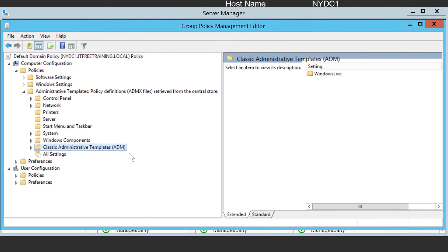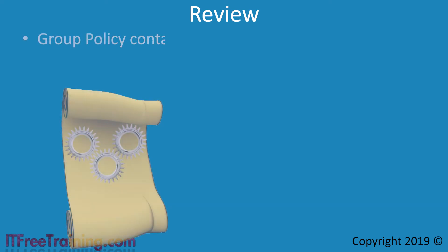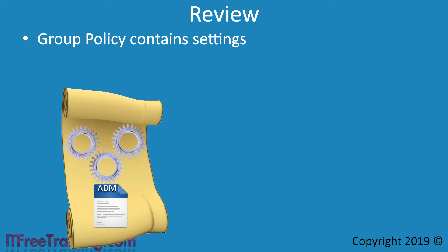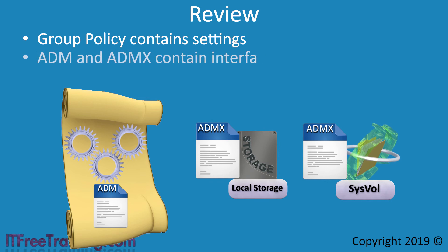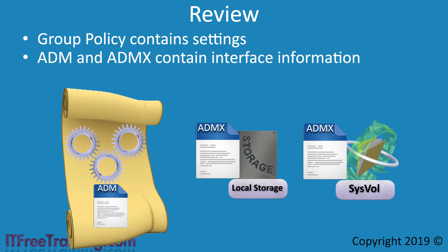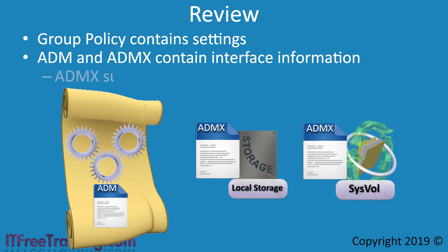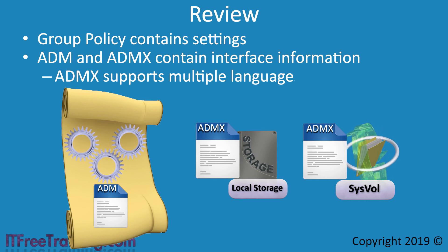This covers how to centralize ADMx files — the process is quite a simple one. To review: a single Group Policy contains settings stored in the Machine and User folders in the sysvol folder. ADM files are the older format stored directly in the Group Policy, whereas ADMx files are stored in local storage or centrally in the sysvol folder. ADM and ADMx files contain the interface seen in Group Policy Management. ADMx files are easier to update, support multiple languages, and are backward compatible with ADM. ADMx is the future of Group Policy, and most likely if you are using Group Policy, you are already using it.